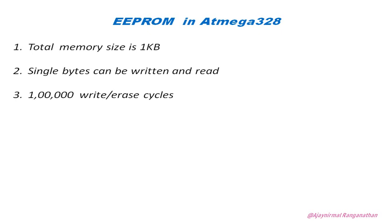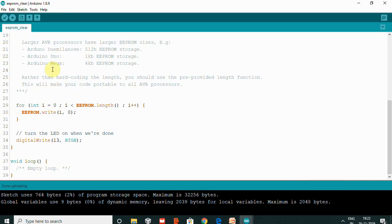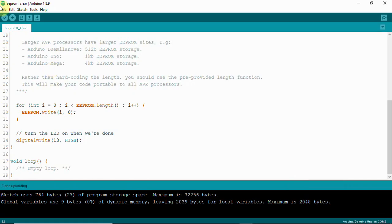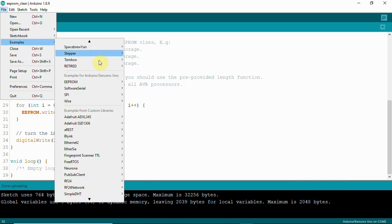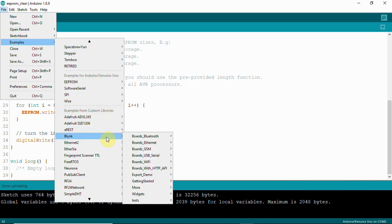In Arduino we have ATmega328, which has a memory of 1KB. Single bytes can be written and read, and it has 1 lakh write and erase cycles. Let's get into the IDE and I will show you the examples already available in the IDE under File > Examples.